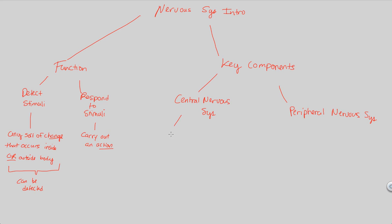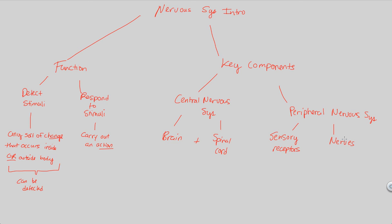They communicate with each other. The central nervous system, from an anatomy perspective, contains two main things: the brain and the spinal cord. Both of these structures are within the central nervous system, and we're going to talk more about them in the next lecture. The peripheral nervous system, which we'll also discuss more in the next lecture, can be referred to as the system that contains sensory receptors — receptors that sense things. In summary, you can call the peripheral nervous system the section that contains various nerves.